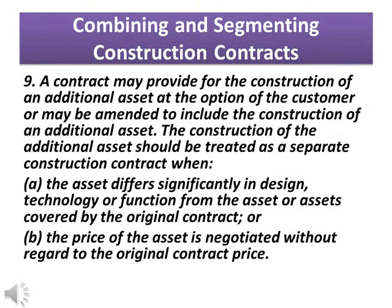The contract may provide for the construction of an additional asset at the option of the customer, or may be amended to include the construction of an additional asset. The construction of the additional asset should be treated as a separate construction contract when: A) the asset differs significantly in design, technology, or function from the asset or assets covered by the original contract; or B) the price of the asset is negotiated without regard to the original contract price.